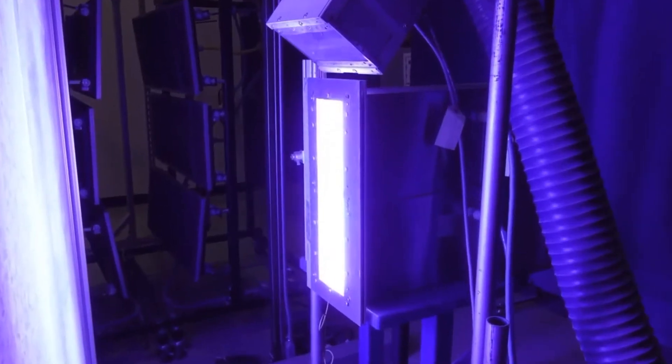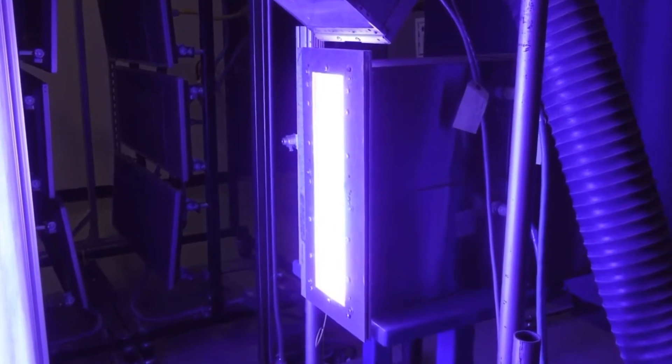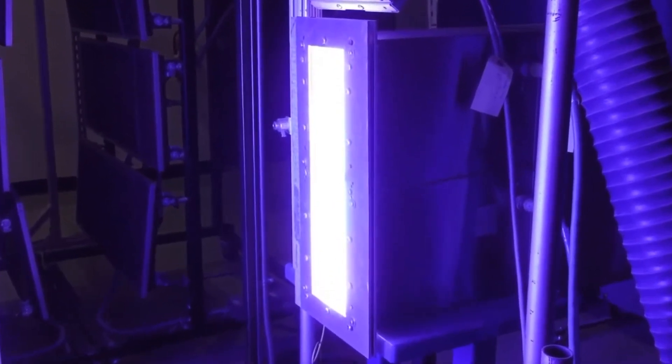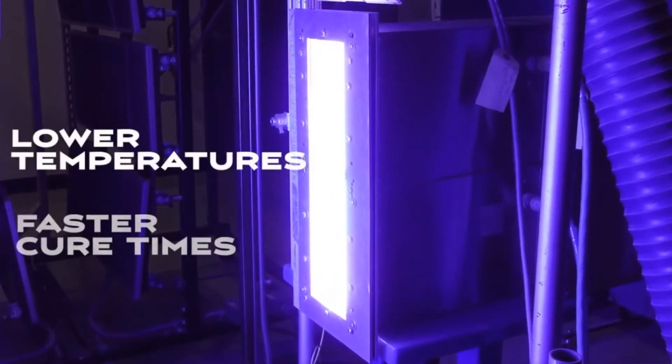We manufacture UV curable powder coatings that are used on composites, plastics, wood, metal, and other substrates. UV cured powder coatings cure with UV light energy instead of heat, utilizing lower temperatures and faster cure times.